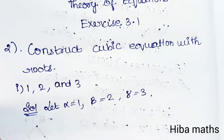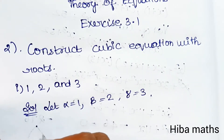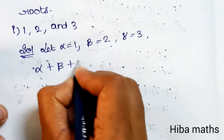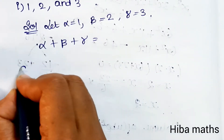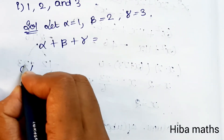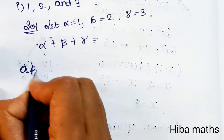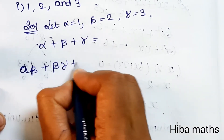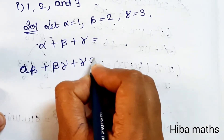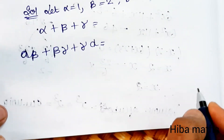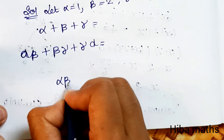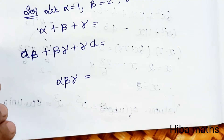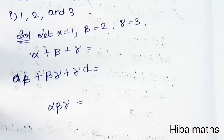To form the equation, we need three things. First, find the sum of the roots. Second, find the sum of the product of roots: alpha·beta plus beta·gamma plus gamma·alpha. Third, find the product of the roots. Then substitute into the general equation.